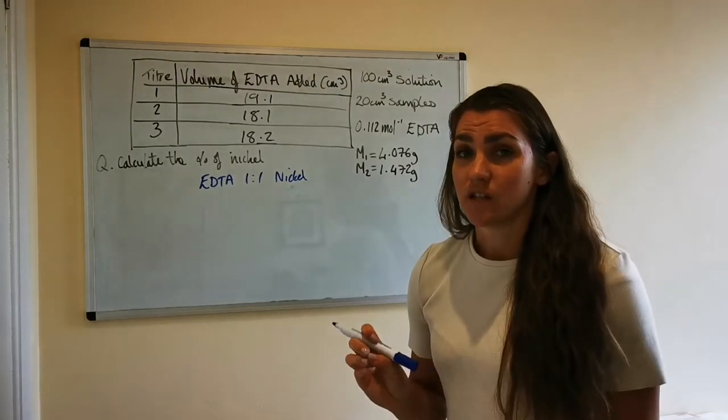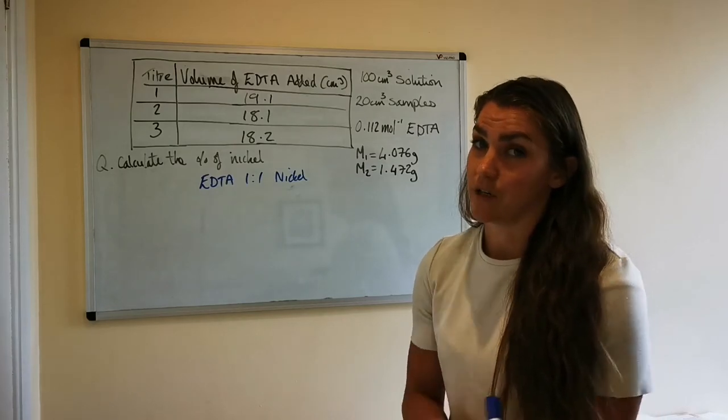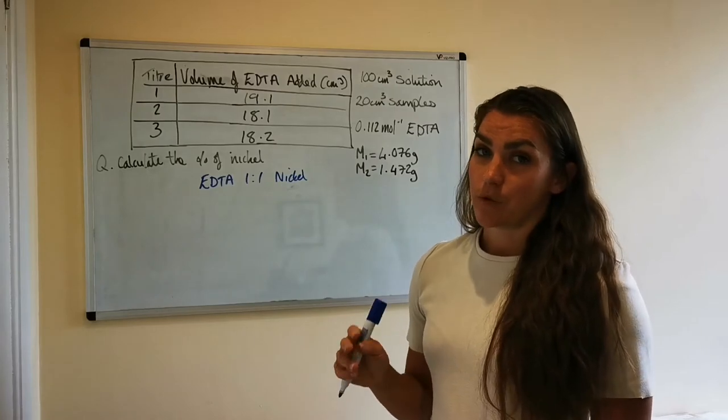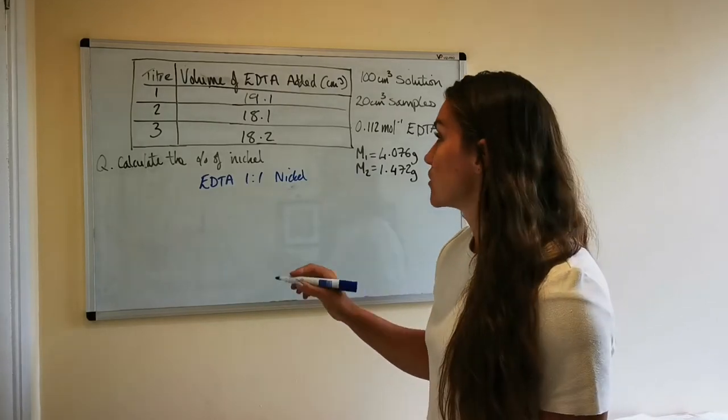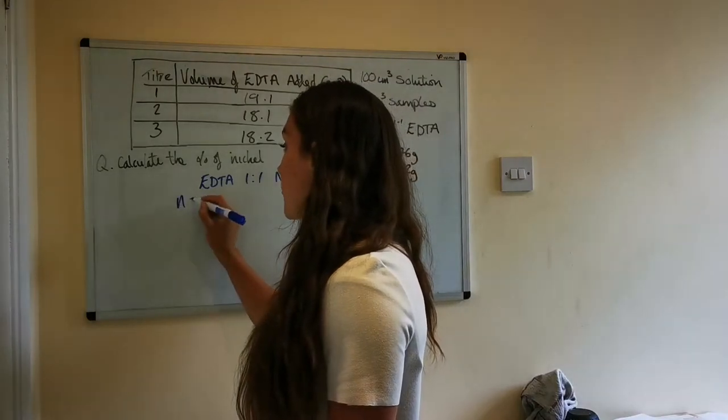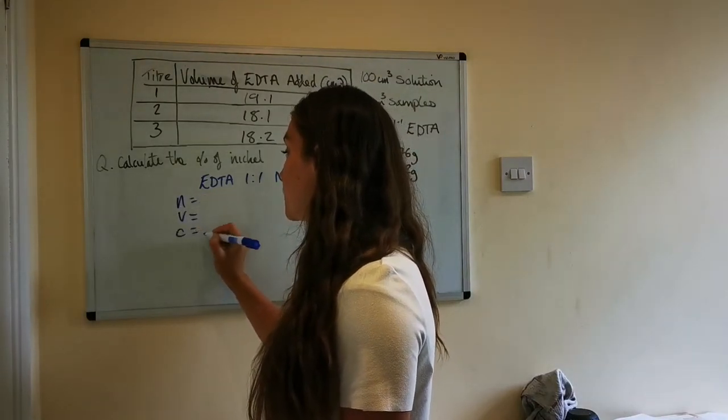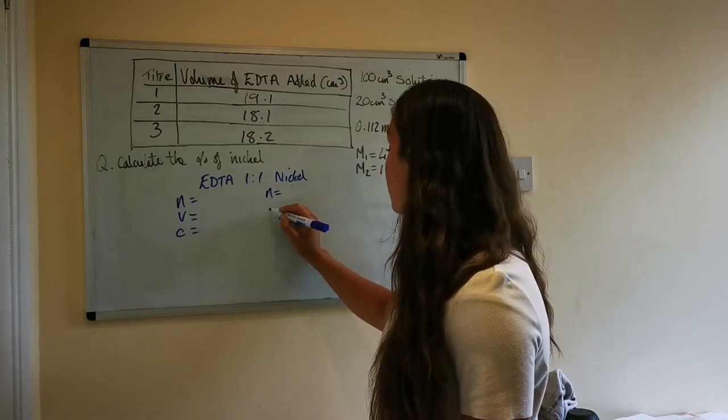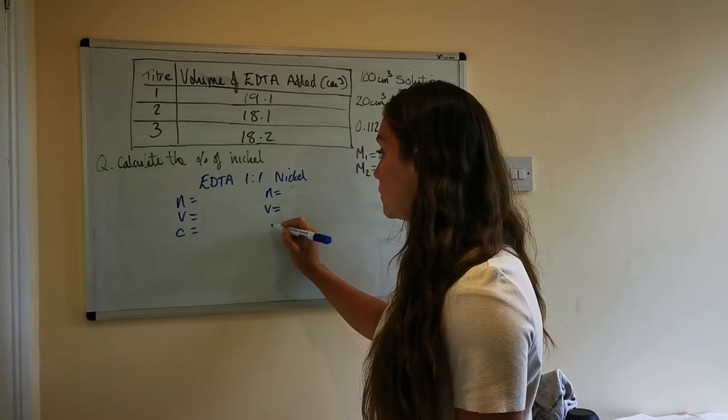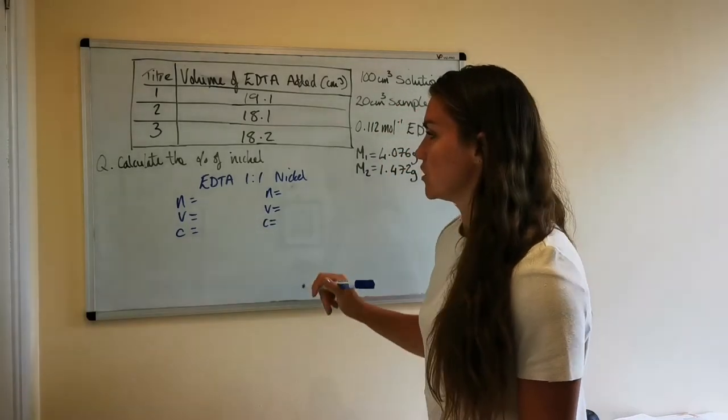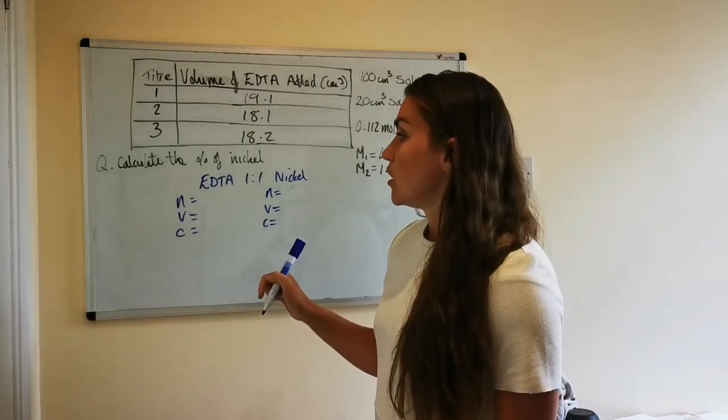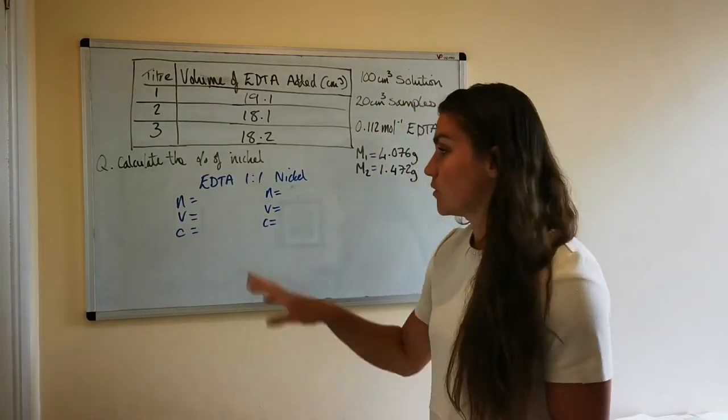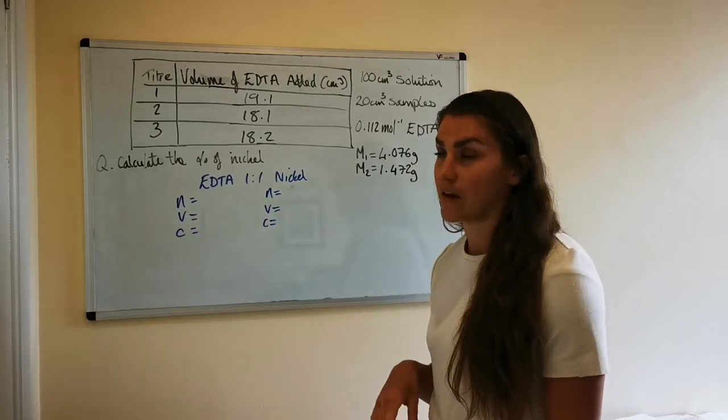Basically every calculation in chemistry requires you to calculate number of moles, so because we're dealing with solutions here, the relationship, the molar relationship we'll be using will be N = V × C first of all. So N equals, V equals, and C equals. So now we look at the information we've been given to see which of these variables we can actually assign a value to.